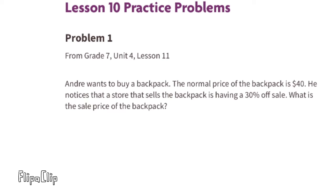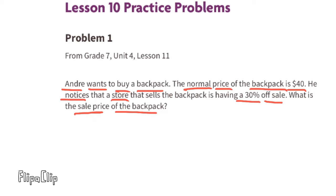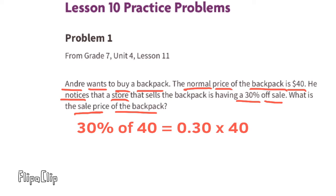From 7th grade Unit 4 Lesson 11. Andre wants to buy a backpack. The normal price of the backpack is $40. He notices that a store selling the backpack is having a 30% off sale. What is the sale price of the backpack? We need to find 30% of 40, and we can do that by multiplying 30 hundredths times 40.